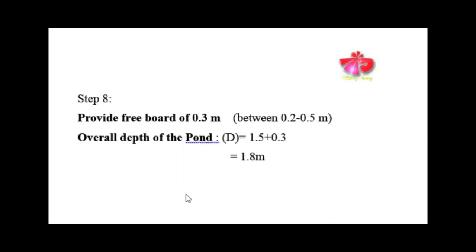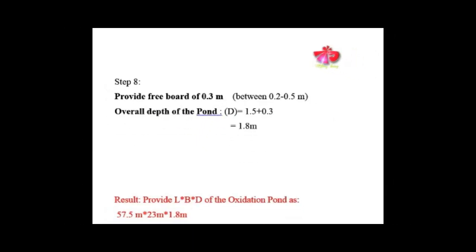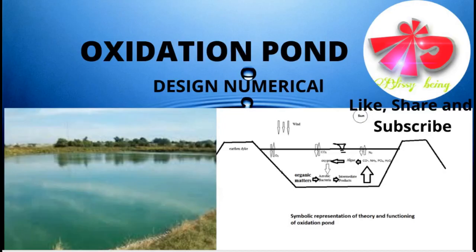In Step 8, we provide a freeboard of 0.3 m, which is within the acceptable range of 0.2 to 0.5 m. Overall depth = effective depth + freeboard = 1.5 + 0.3 = 1.8 m. Therefore, the final design dimensions are: L = 57.5 m, B = 23 m, overall depth D = 1.8 m.